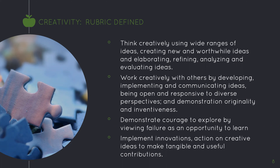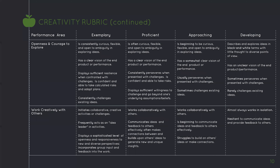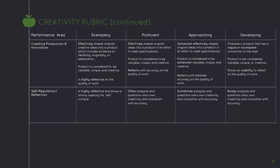Let's have a brief look at the rubric's performance areas. The creativity rubric looks at six important strands: idea generation, idea design and refinement, openness and courage to explore, work creatively with others, creative production and innovation, and finally, self-regulation and reflection. A copy of the rubric has been posted in this session's module in Canvas for closer examination and your reference while selecting evidence for your portfolio.